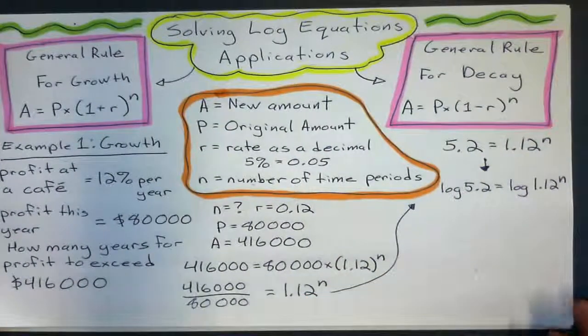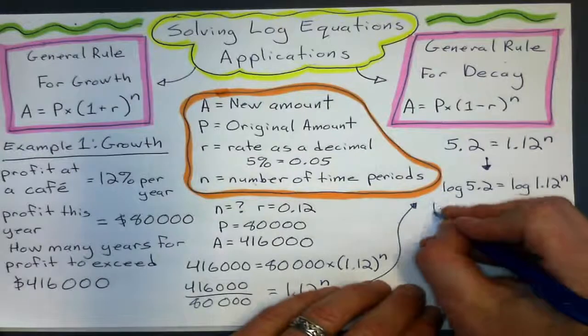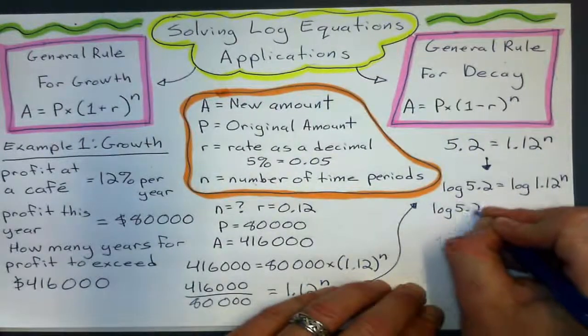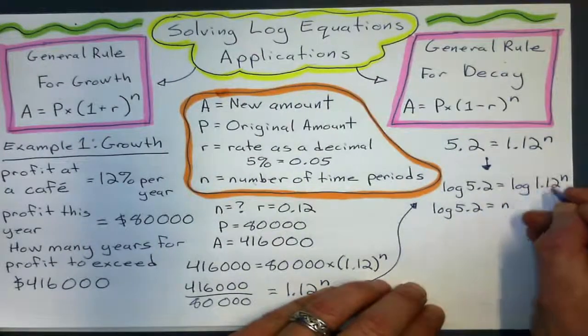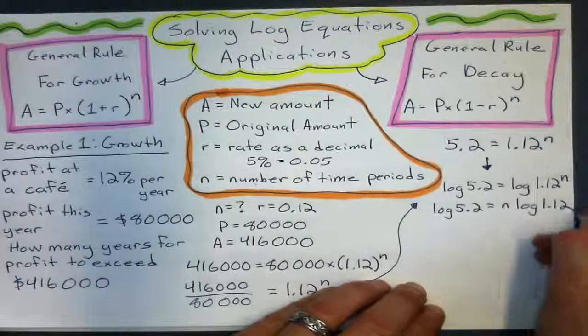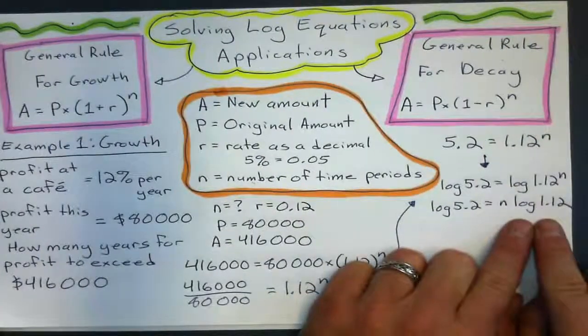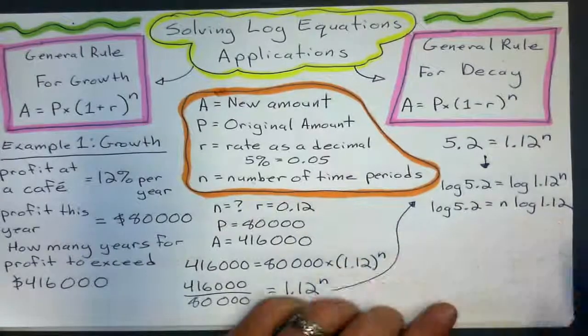Running out of space here, but that's okay. And log 5.2 equals N times log 1.12. Because that's how we write it.